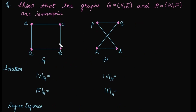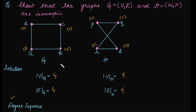Now the next question is to show that two graphs G and H are isomorphic. The first step is to count the number of vertices: graph G has 4 vertices and graph H also has 4. Total edges in G is 4, and in H is also 4: from P to Q, R to S, P to S, and R to Q. Next we calculate the degree sequence. After calculating the degrees of each vertex, the degree sequence for G is 2, 2, 2, 2 and for H is also 2, 2, 2, 2. All quantities match, so we move to building the mapping.